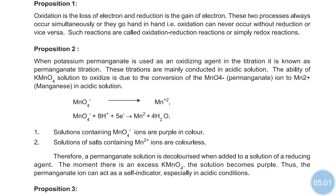The MnO4 minus ion is purple in color and its conversion to Mn2+ occurs. This Mn2+ ion is colorless. Therefore, the permanganate solution is decolorized when added to a solution of a reducing agent. When we are adding KMnO4 from the burette, as long as the reducing agent is present, the solution becomes decolorized. When we add excess KMnO4, the solution becomes purple. This permanganate ion acts as a self-indicator, especially in acidic conditions.